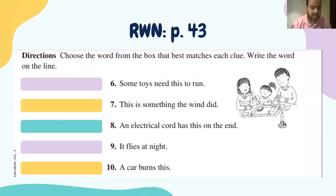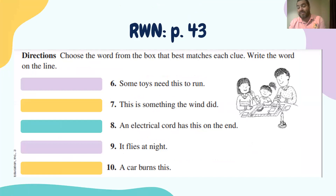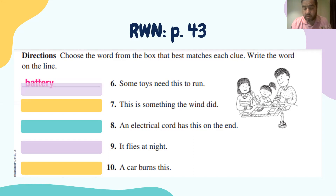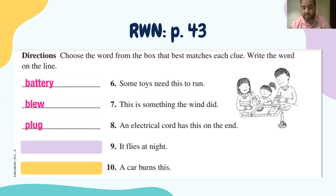For the second question, it's mostly the same — you choose the word from the box that best matches each clue. But this is not a definition; it's a clue giving you a hint. For example: 'Some toys need this to run.' I'm telling you my word is related to toys. The answer is 'battery,' because batteries are needed for toys. You have to read each clue and decide which word it is.